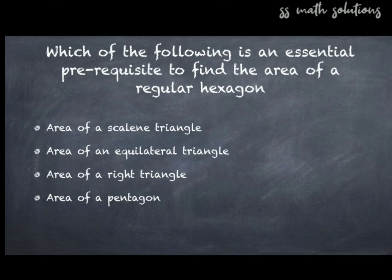Question 22: Which of the following is an essential prerequisite to find the area of a regular hexagon? Options: area of a scalene triangle, area of an equilateral triangle, area of a right triangle, area of a pentagon. The answer is area of an equilateral triangle — it is needed to study the area of a regular hexagon.